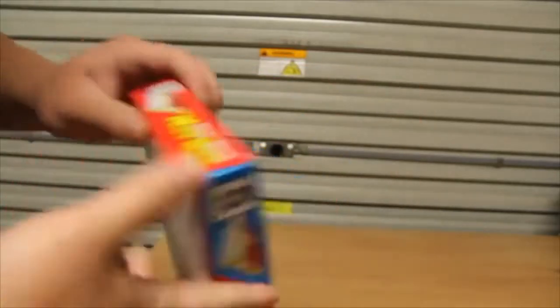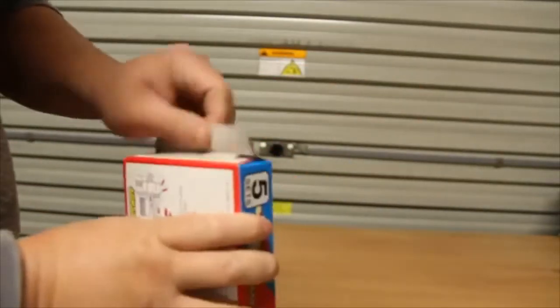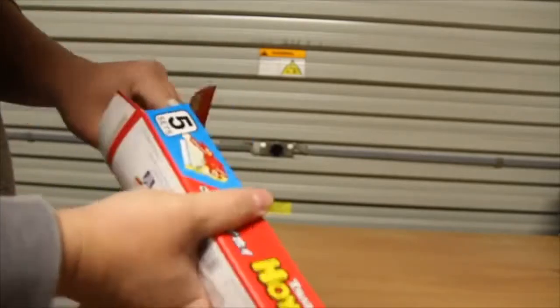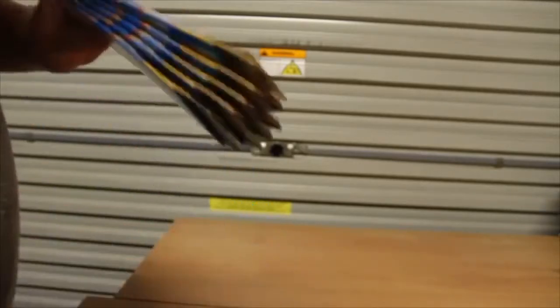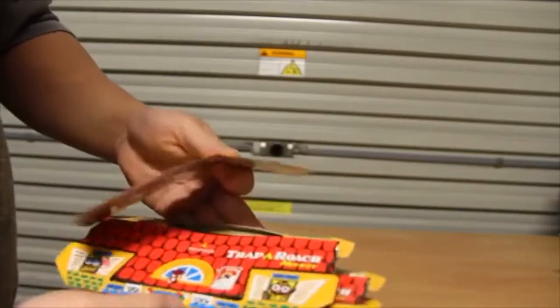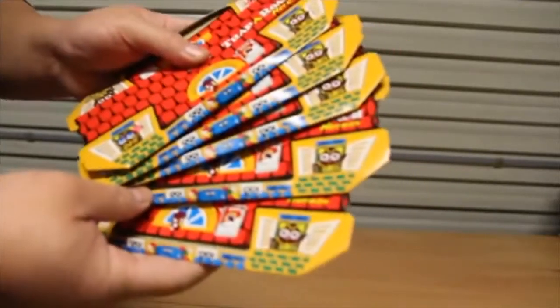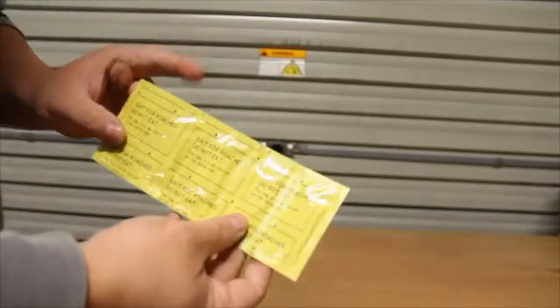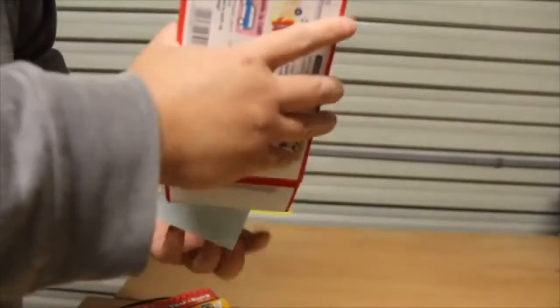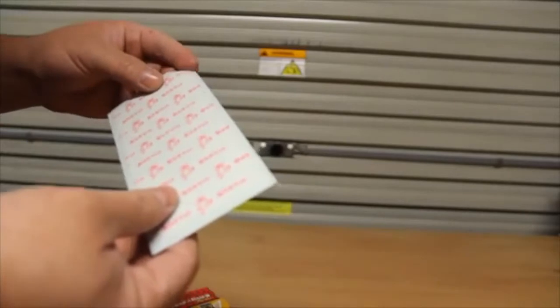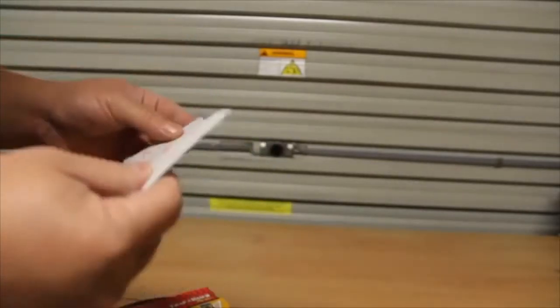Okay, let's unbox this thing. In here you'll get five of the traps and this is the bait. And also you have vertical mounts with double tape if you want to mount it in your cupboard or something.